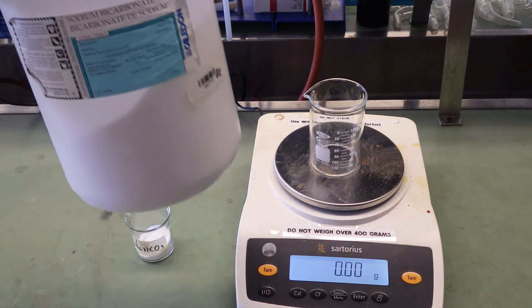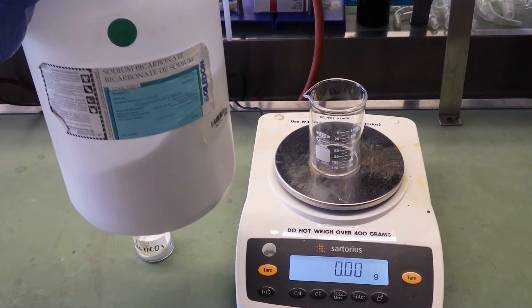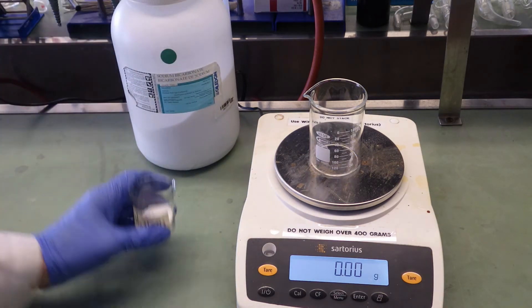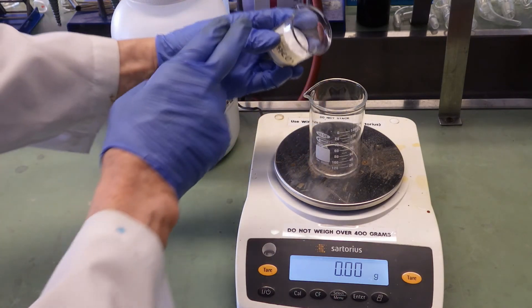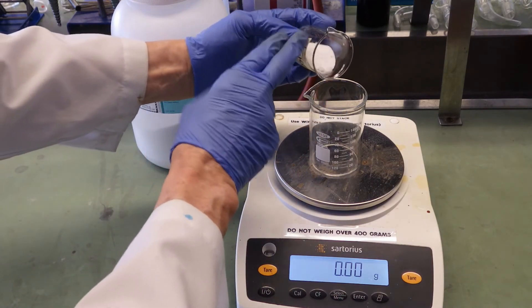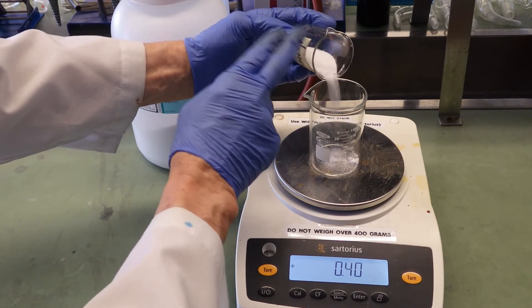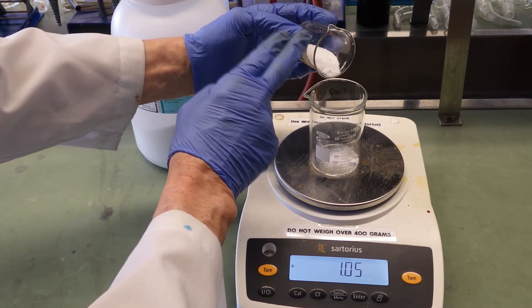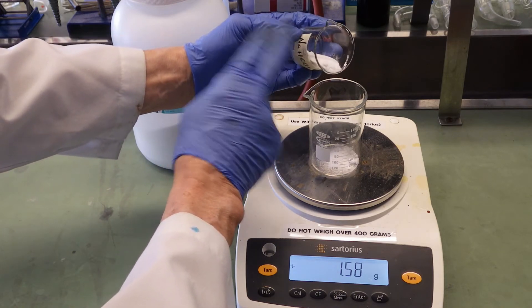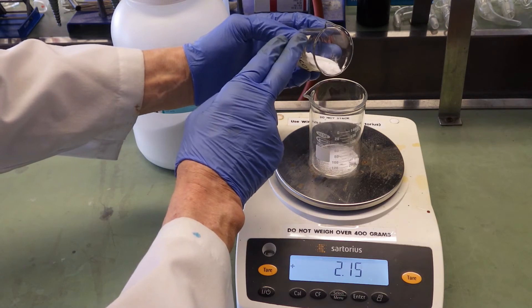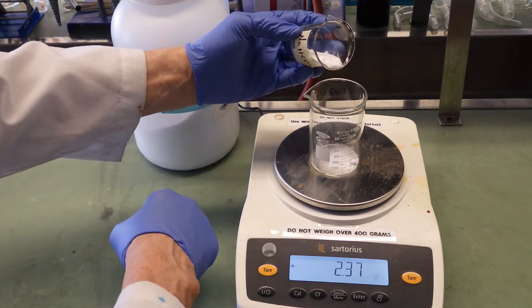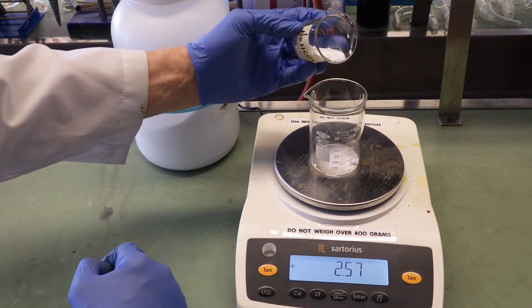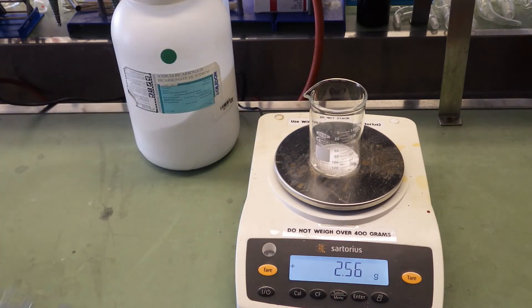I'm going to add sodium bicarbonate. 2 to 2.5 grams. You don't actually need a spatula for a powder. You can just tap it, as I'm doing here. You want to record the mass of sodium bicarbonate as well. That's 2.57 grams.